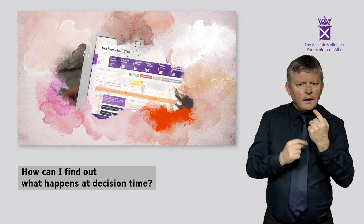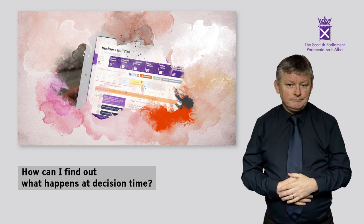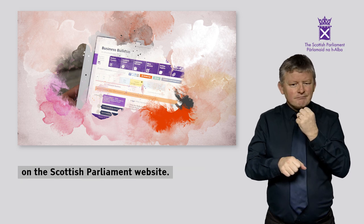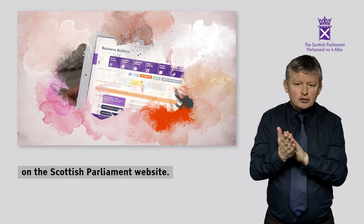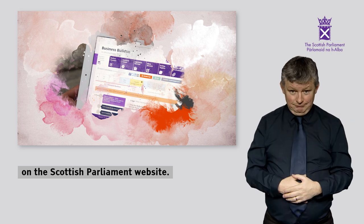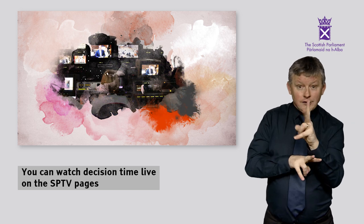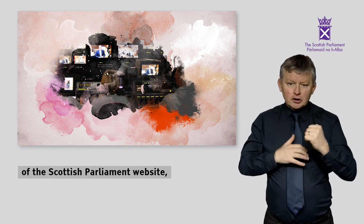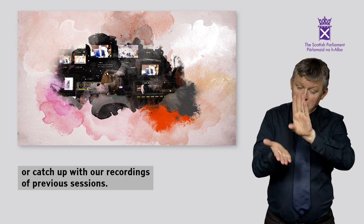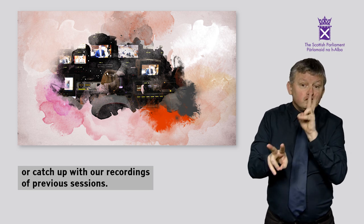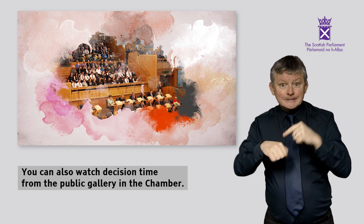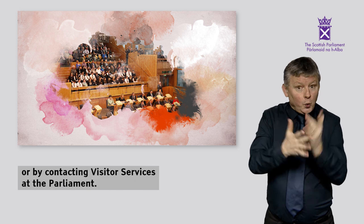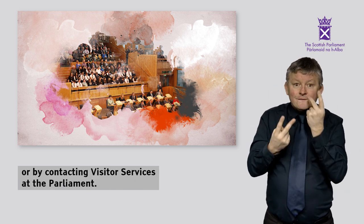How can I find out what happens at Decision Time? You can find out when Decision Time will be in the Business Bulletin on the Scottish Parliament website. You can watch Decision Time live on the SPTV pages of the Scottish Parliament website or catch up with recordings of previous sessions. You can also watch Decision Time from the public gallery in the Chamber. You can request tickets online or by contacting Visitor Services at the Parliament.